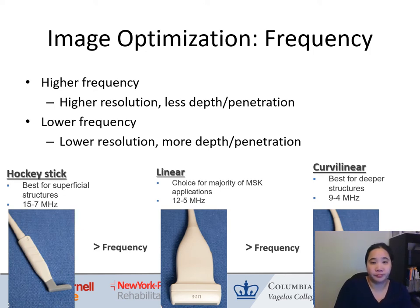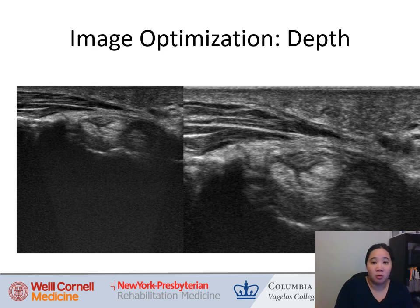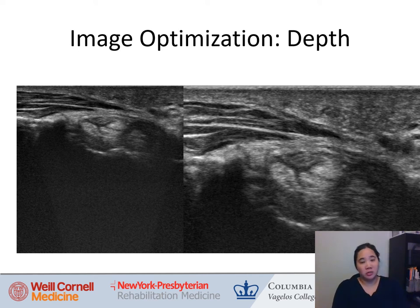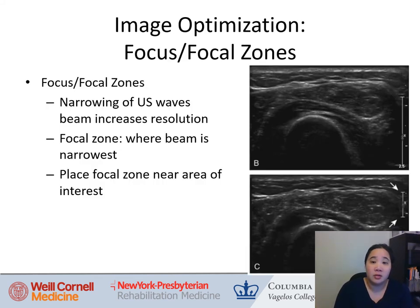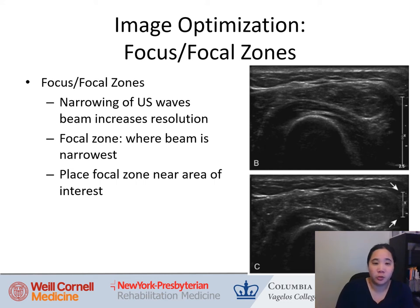Depth is adjustable on the machine — make sure the whole structure is visible and fills the screen. As shown, if the structure only takes up one-third of the screen, decrease the depth so it fills the entire image. Focal zones represent the narrowing of the ultrasound wave beam, which increases resolution. Place the focal zone near the area of interest — narrowing the focal zone, as shown by the arrows, can help increase resolution slightly.